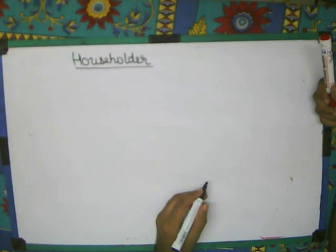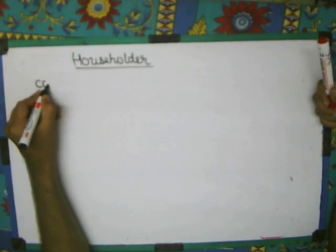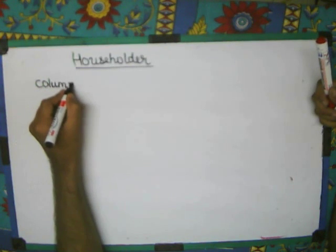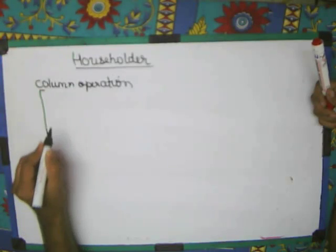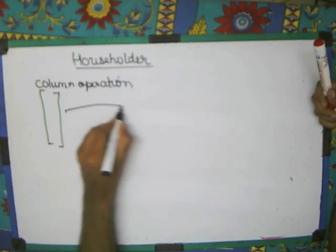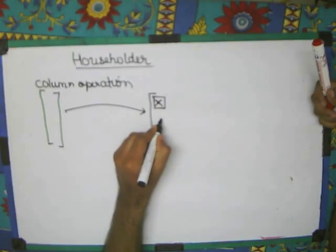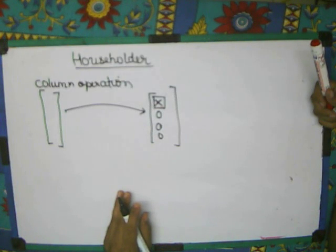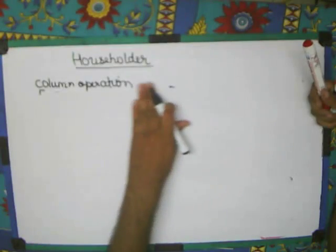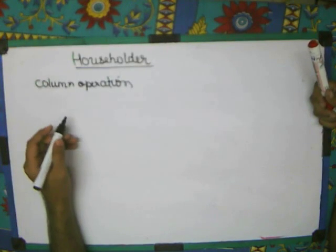Now, what I have to do is that I have to do some operation on a column vector in such a way that it maps, it transforms this vector into a single value or something like that again. And in such a way that the norm does not get affected. Let me tell you how it will happen, what I am trying to say. In such a way that norm will not get affected.